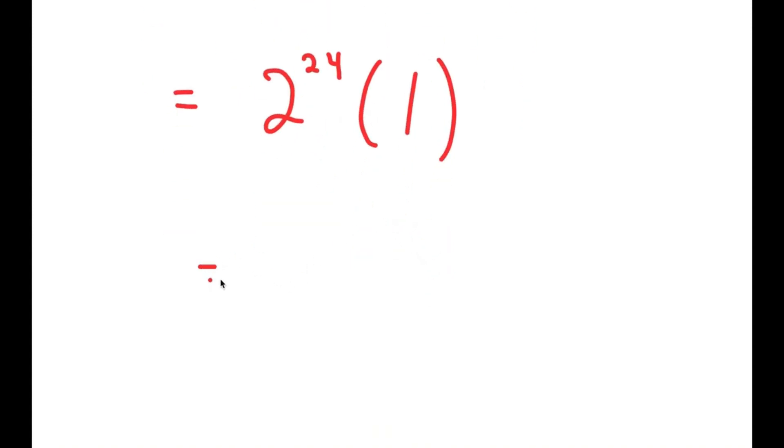Which is equal to 2 to the power of 24 times 1. Anything times 1 is obviously just equal to itself, so this is just equal to 2 to the power of 24.